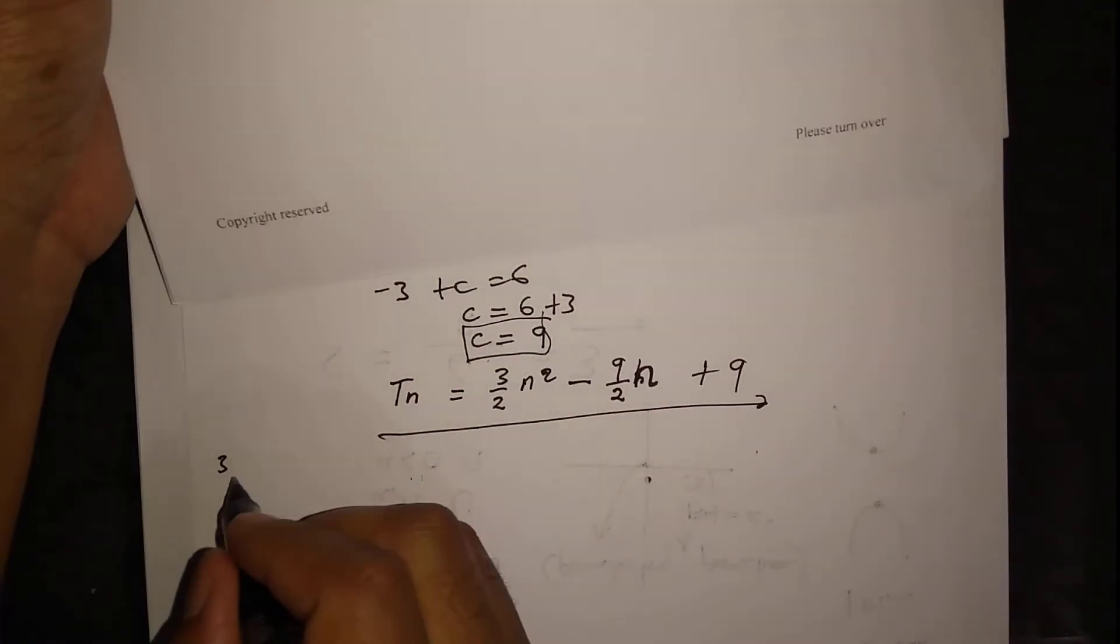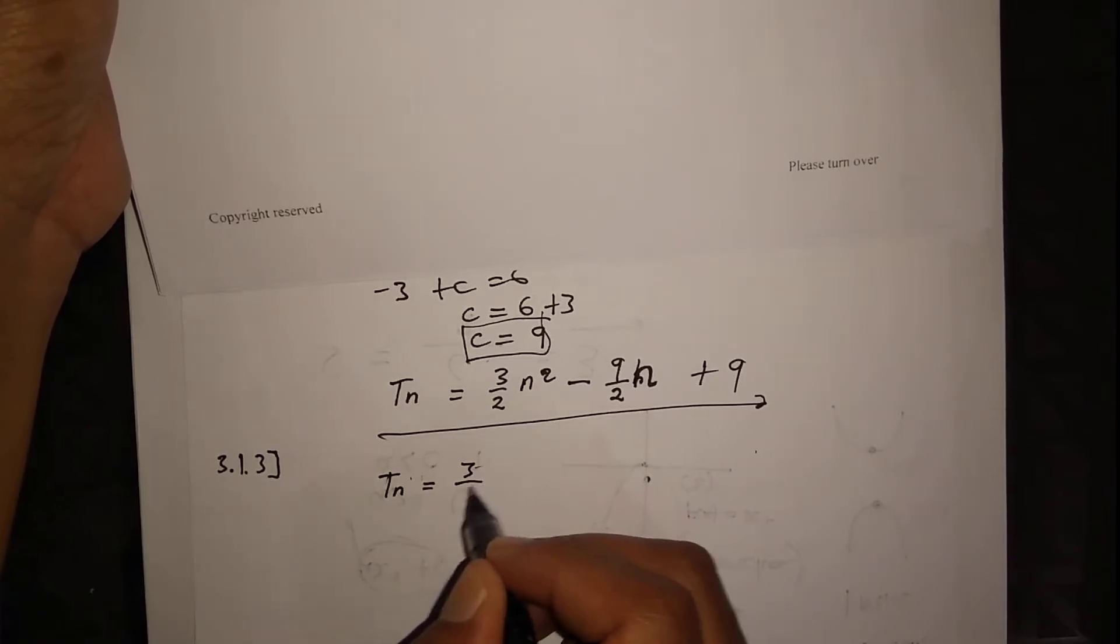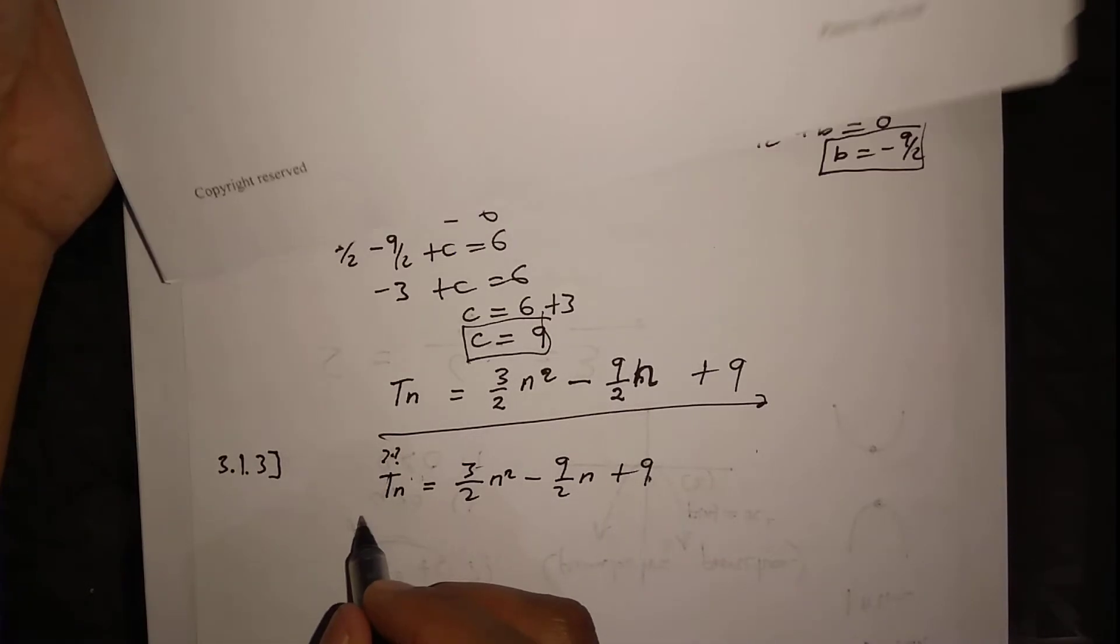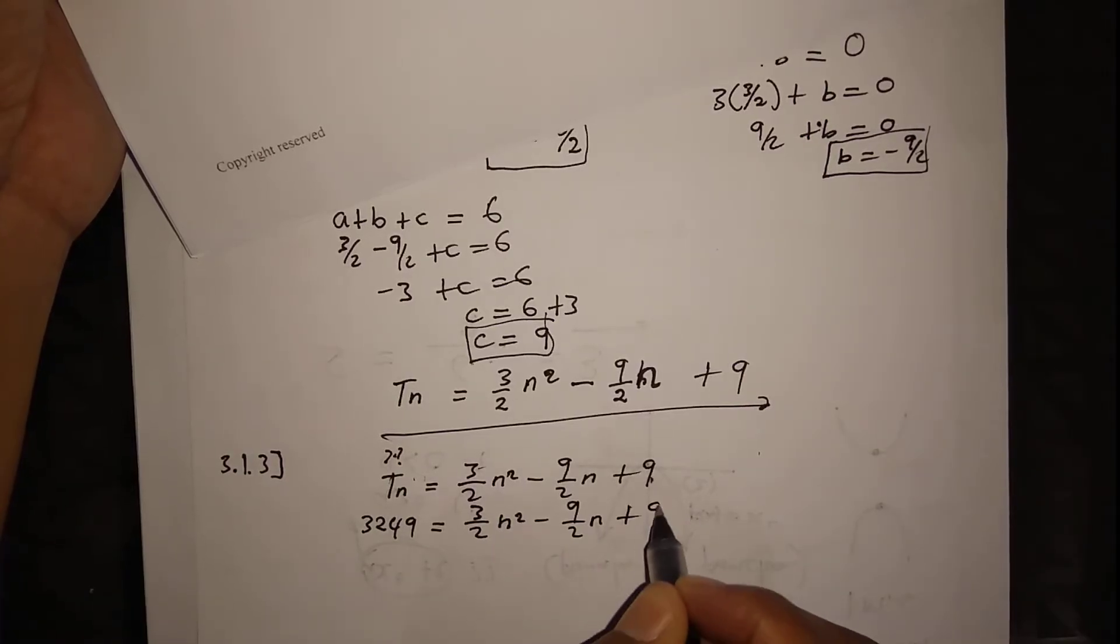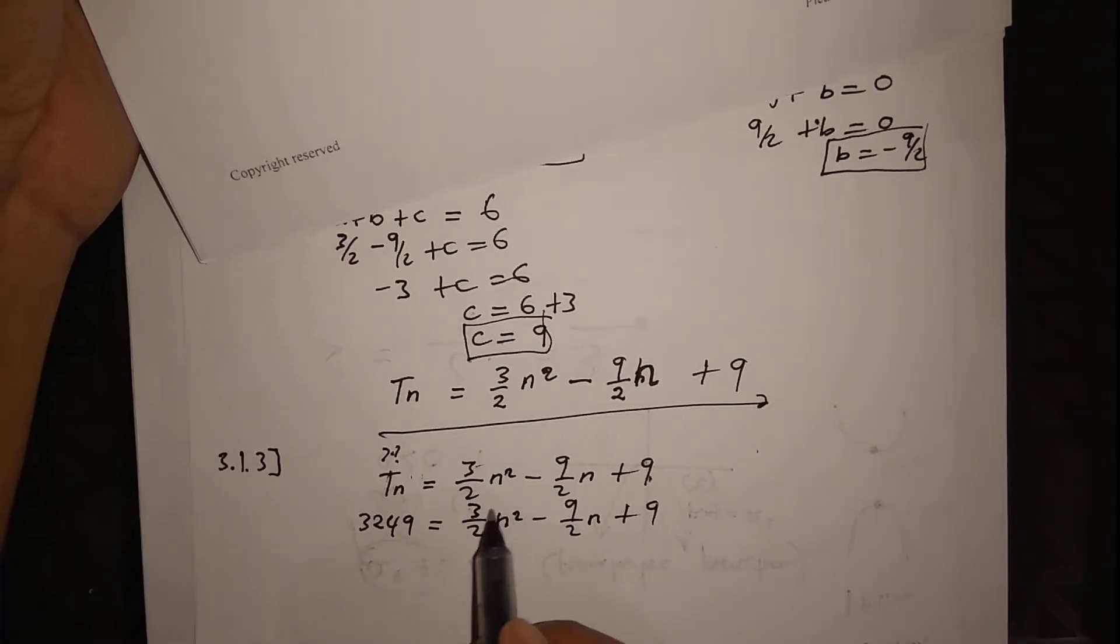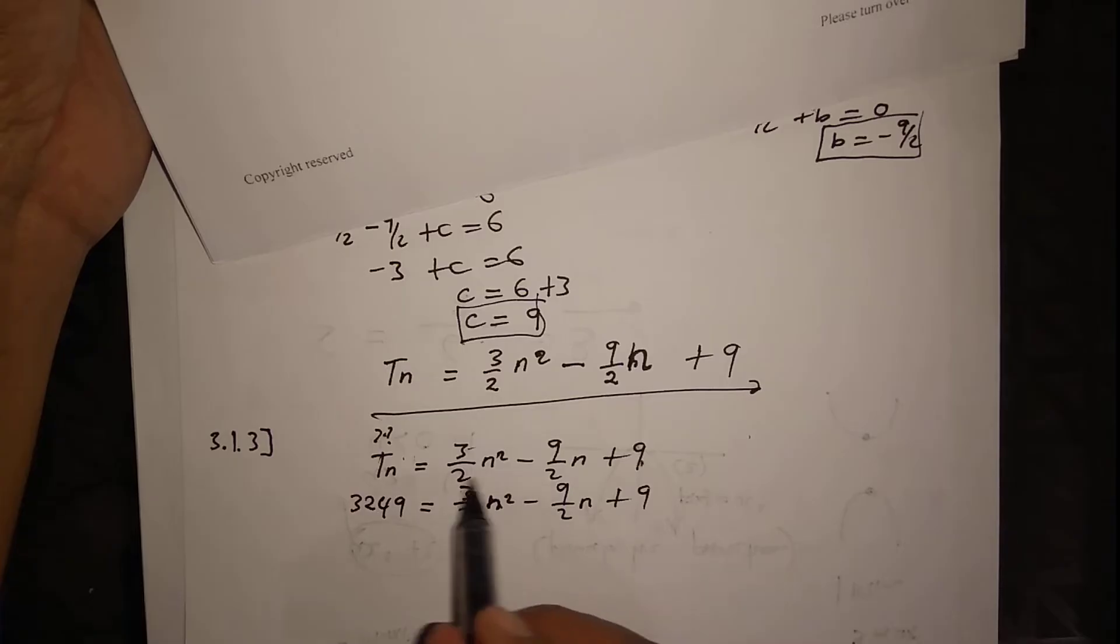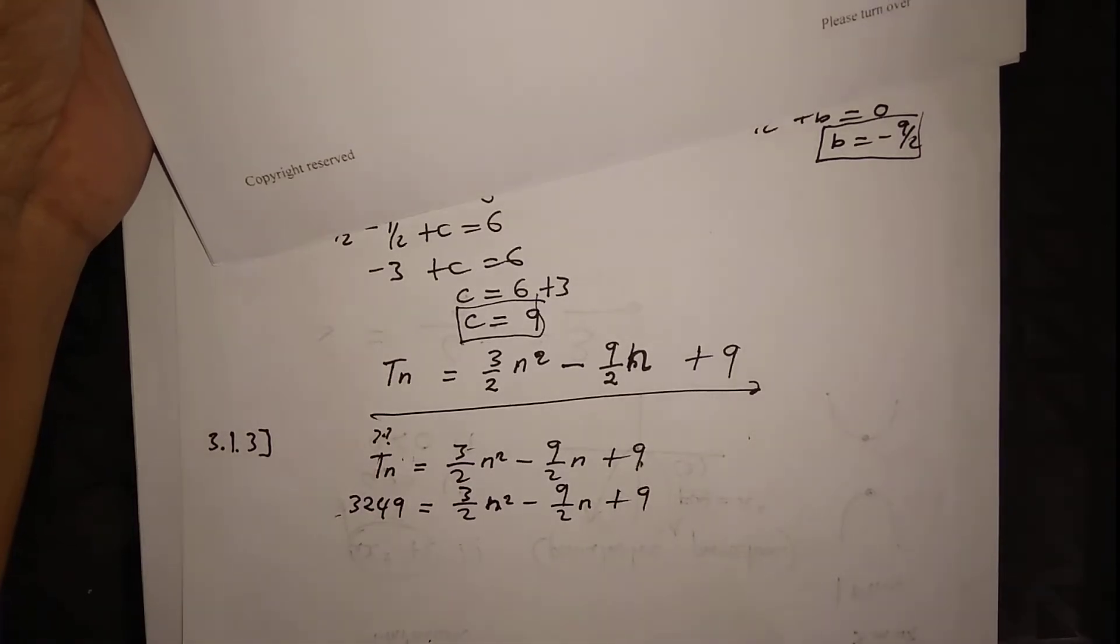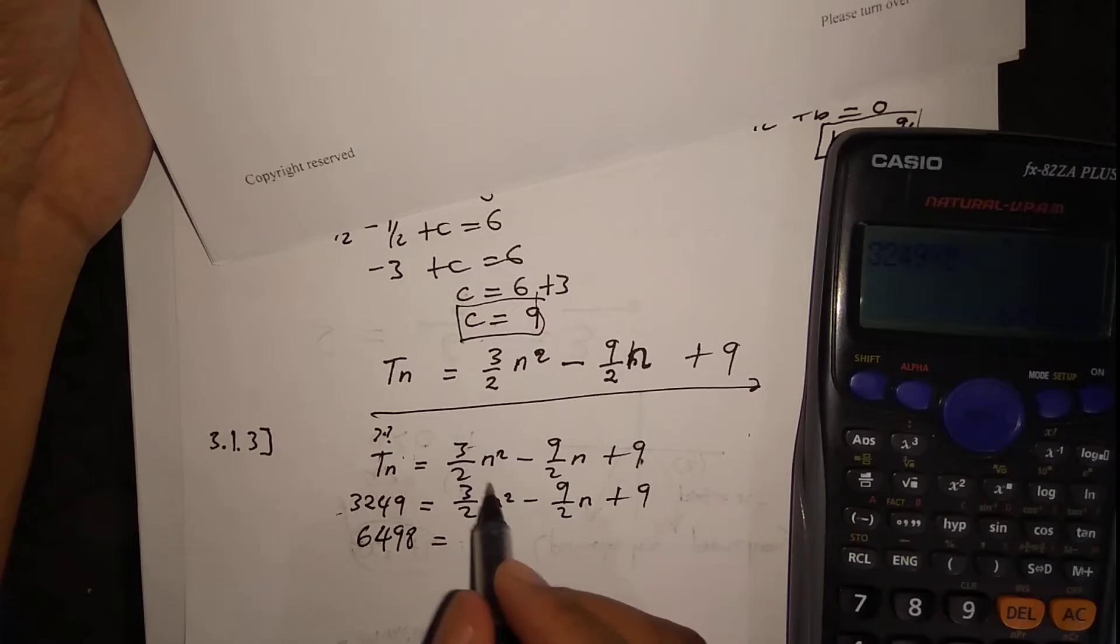So Tn equals 3 over 2 n squared minus 9 over 2 n plus 9. We set this equal to 3249. This is a quadratic equation. Let's simplify by multiplying everything by 2 to eliminate fractions. 3249 times 2 is 6498 equals 3n squared minus 9n plus 18.